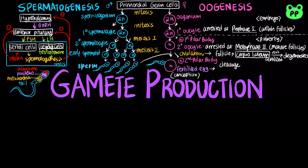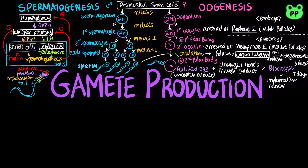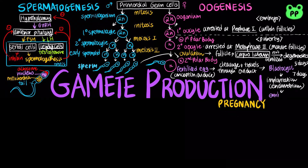In the case of conception, the zygote begins to divide by mitosis in a process called cleavage as it travels down the oviduct, giving rise to a blastocyst, a ball of cells with a cavity. After blastocyst formation, the embryo implants into the endometrium. The embryo releases human chorionic gonadotropin, which mimics luteinizing hormone and produces stable progesterone, which prevents menstruation.